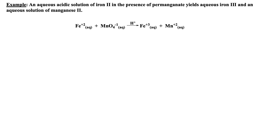Let's apply these rules to the following redox reaction in acid. First, using our nomenclature knowledge, we write the unbalanced equation from the word problem. Notice I wrote a proton over the arrow to remind myself that we are in acid. Now, split reactants and products into two half-reactions: the reduction and oxidation reaction.